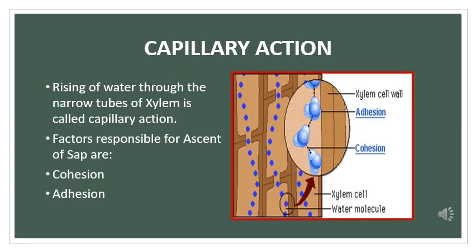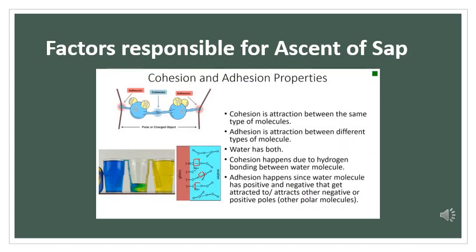Once the water reaches the xylem tissue along with root pressure the capillary action then further pushes the water up the narrow tubes of xylem. This rising of water through the narrow tubes of xylem is called capillary action. The factors that are responsible for ascent of sap here are cohesion and adhesion. Cohesion is the mutual attraction between water molecules and adhesion is the attraction of water molecules to the surface of elements of xylem. These two properties of water molecules help to form an unbroken continuous water column in the xylem and help the water to rise up through the narrow tubes of xylem.